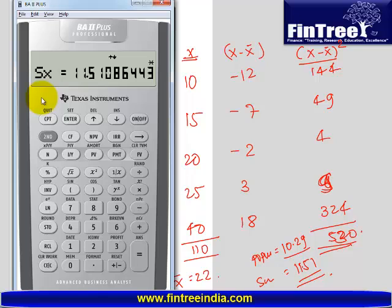It is giving you s x, and what is this s x? Sample standard deviation. So sample standard deviation of your data set is 11.51, and it will give you sigma x which is the population standard deviation which is 10.29.